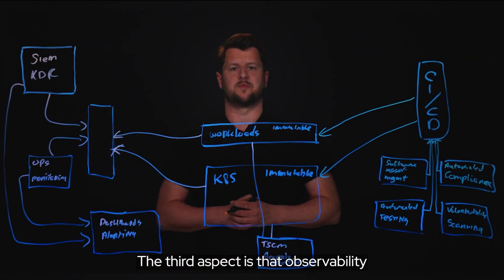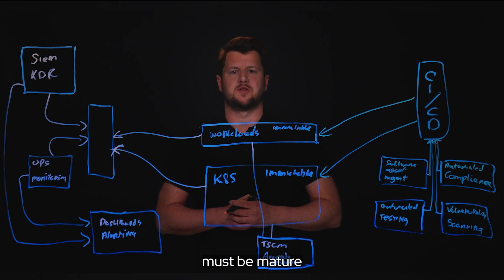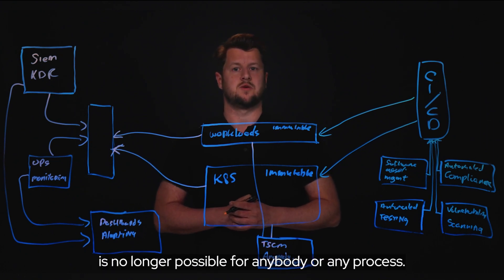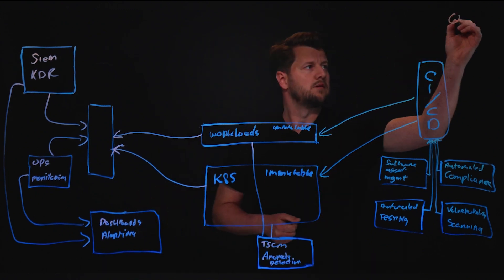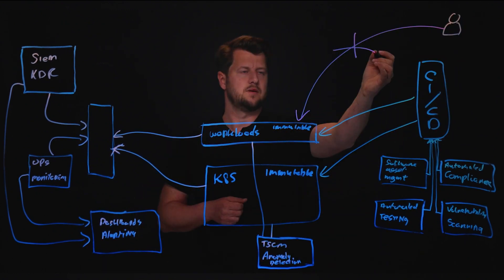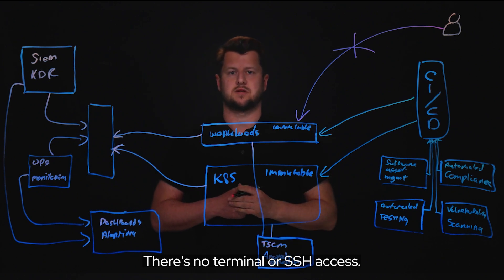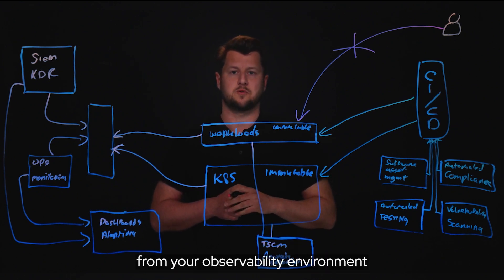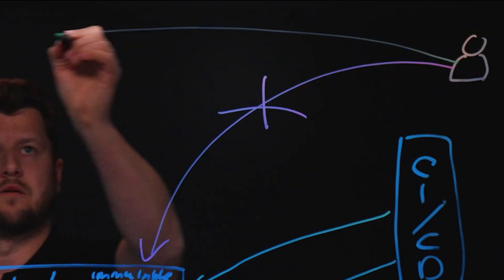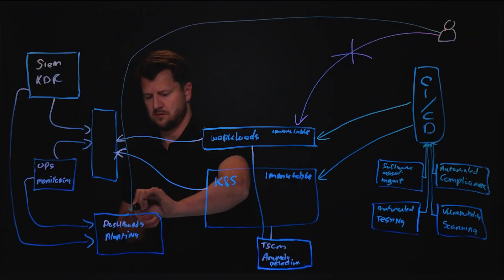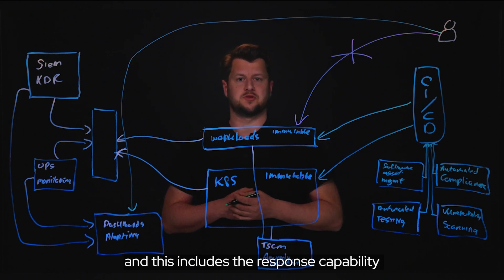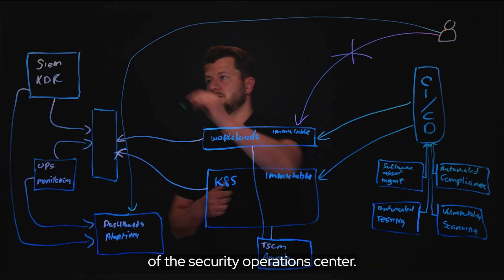This in turn populates various dashboards and alerting engines to support and notify developers and engineers. The third aspect is that observability and testing must be mature, as logging into production containers to resolve incidents is no longer possible for anybody or any process. There's no terminal or SSH access. Being able to investigate issues has to come entirely from your observability environment. To resolve any issues we go back to the first principle, and this includes the response capability of the security operations center.